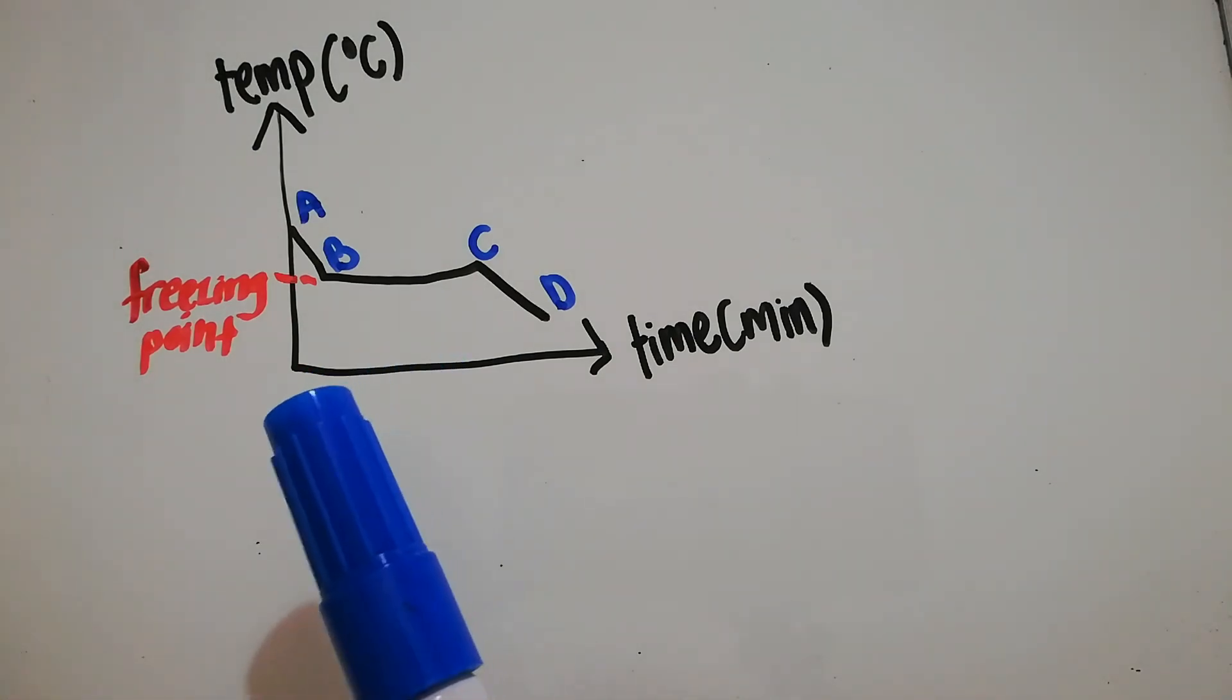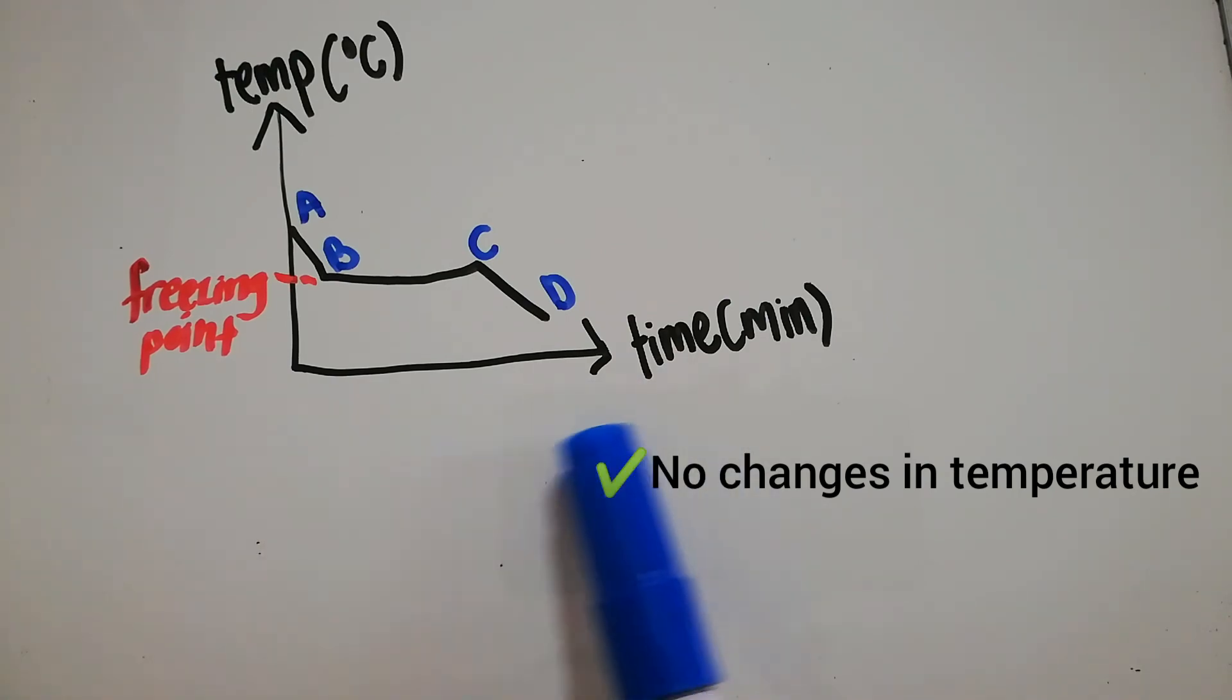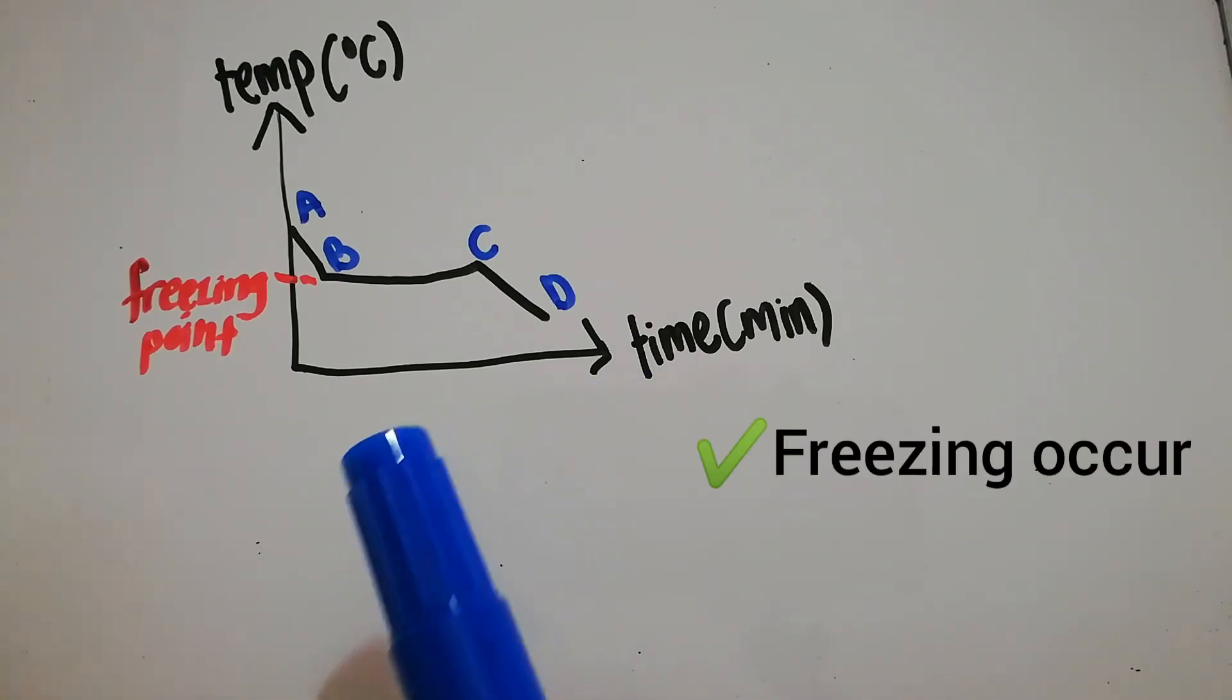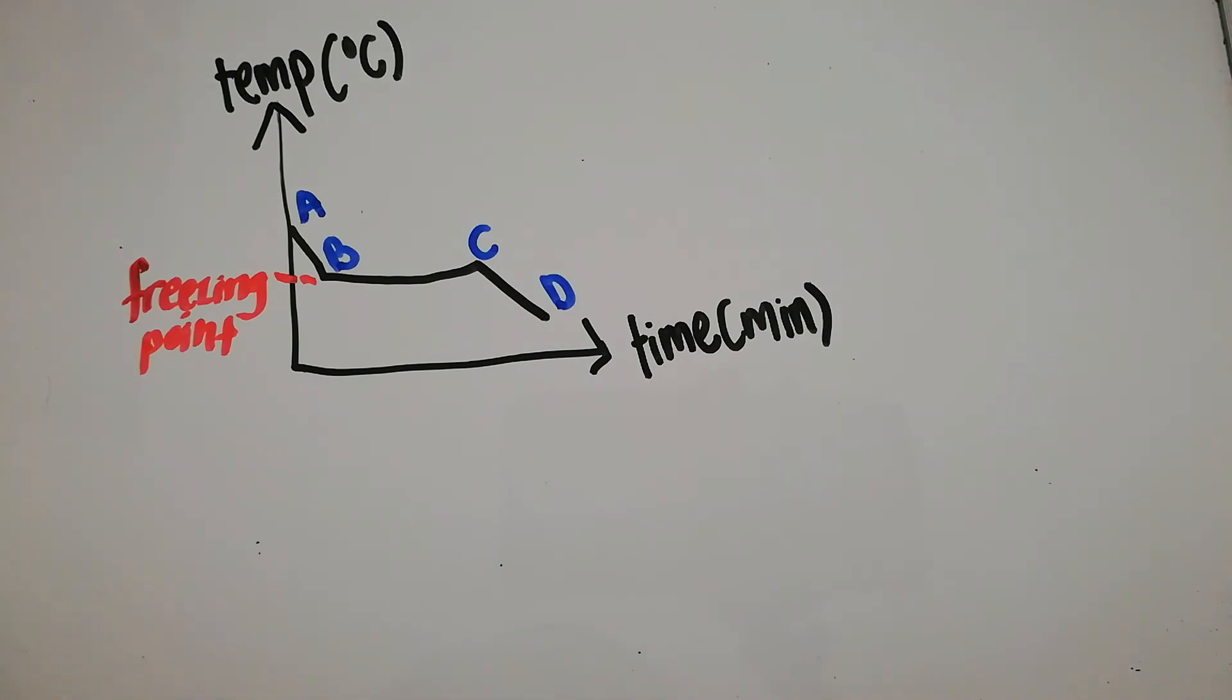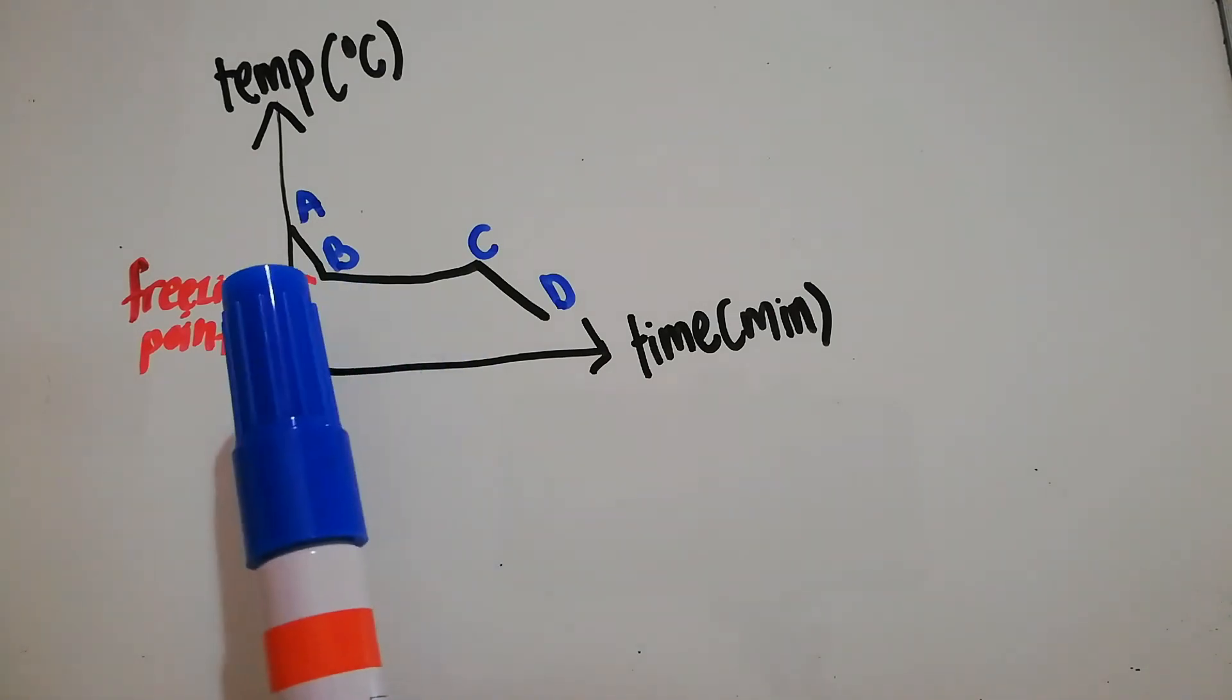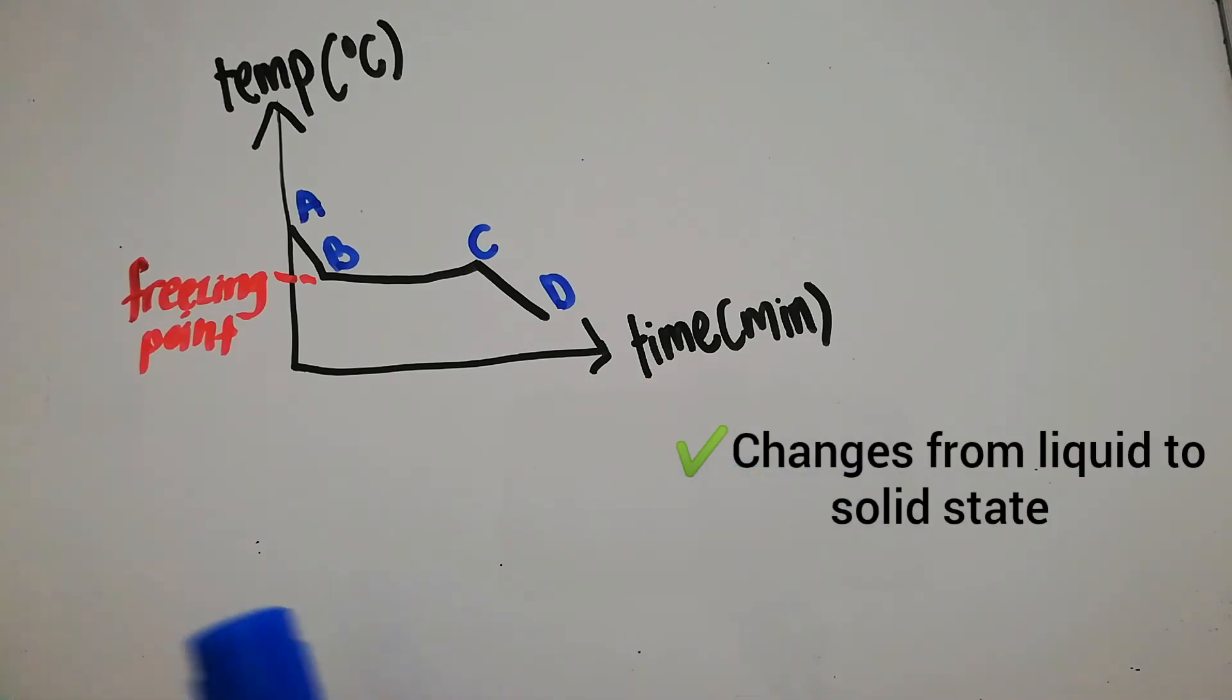From point B to C, we can see there is a constant temperature. At this point, freezing occurs. It is a freezing point. There is no change in temperature because heat energy lost to surrounding is balanced by heat energy released when the particles attract each other to form solid. At this point, it is the change from liquid to solid.